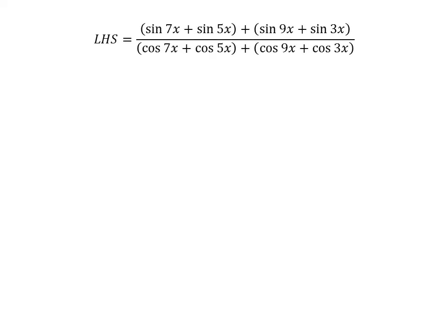The left-hand side of the equation to be proved is: sine of 7x plus sine of 5x plus sine of 9x plus sine of 3x, upon cosine of 7x plus cosine of 5x plus cosine of 9x plus cosine of 3x.